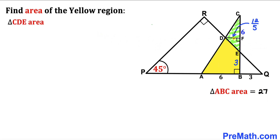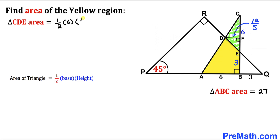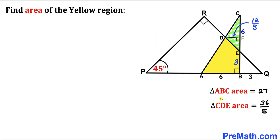Now let's calculate the area of triangle CDE. Here CE is the base, equal to 6 centimeters, and the height is DF = 12/5. So area = (1/2) × 6 × (12/5) = 36/5 centimeters squared.